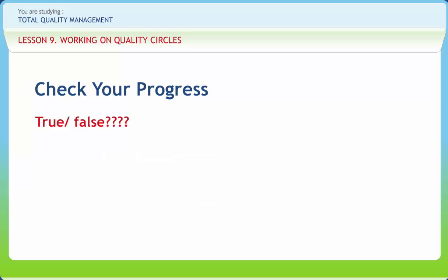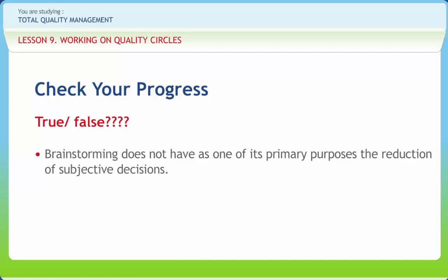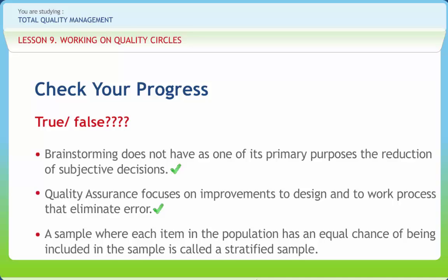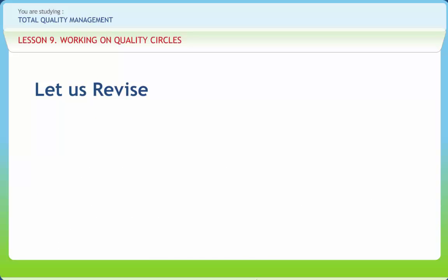Let us check if we have understood the concepts discussed. Brainstorming does not have as one of its primary purposes the reduction of subjective decisions — right or wrong? Right. Quality assurance focuses on improvements to design and work processes that eliminate error — right or wrong? Right. A sample where each item in the population has an equal chance of being included is called a stratified sample — right or wrong? Wrong.